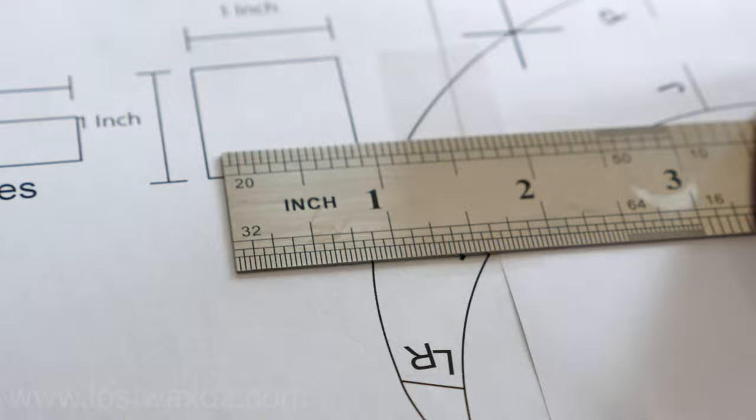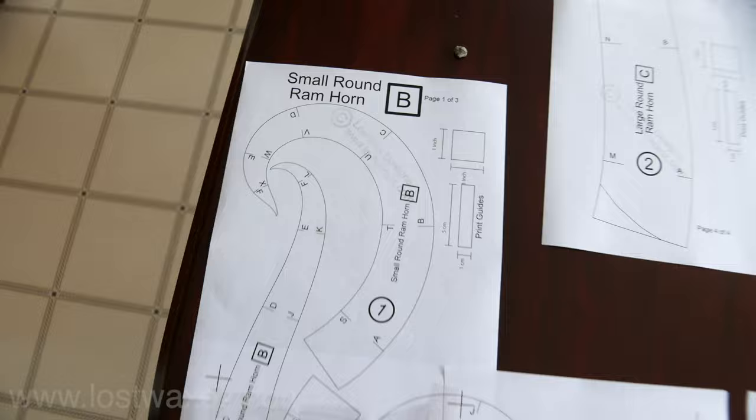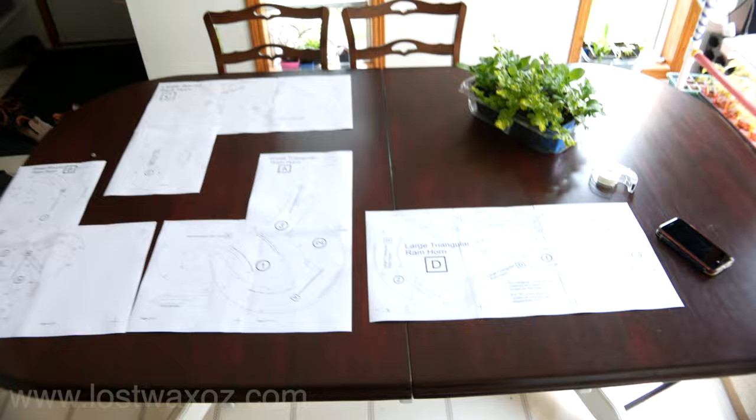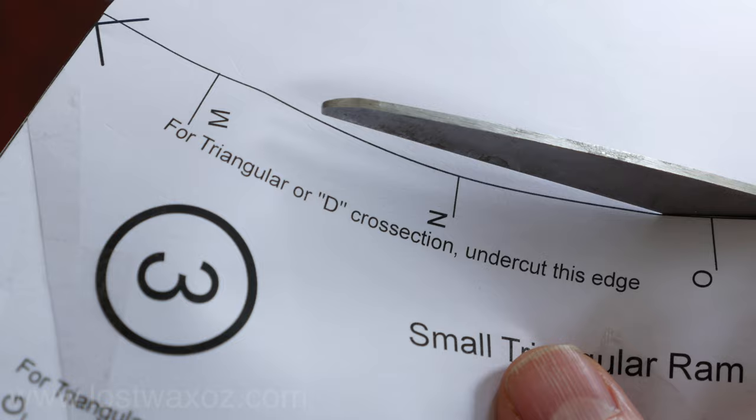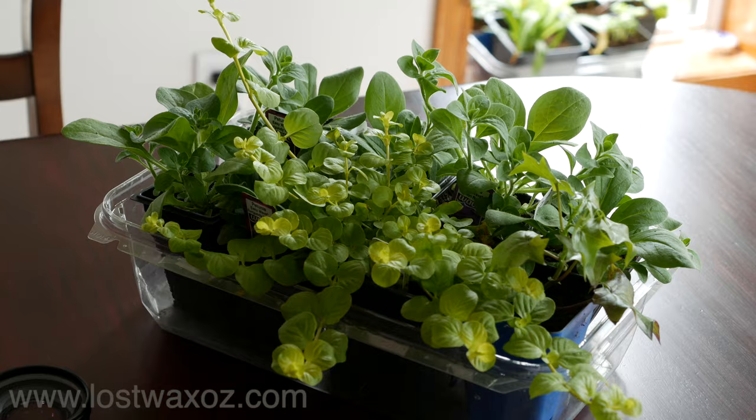So today we're looking at all the ram horns in this bundle: the small triangular ram horn, the small round ram horn, the large round ram horn, and the large triangular ram horn. And a plant. Now you can cut them out, cutting right along the black line with some scissors. When you're done, you should have a plant, some scrap paper, and a bunch of horn patterns.